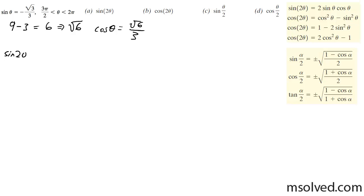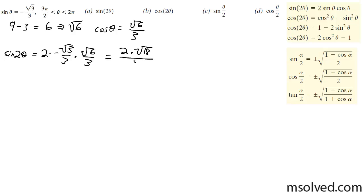So now I can solve for the sine of 2 theta, which is going to be equal to 2 times negative square root of 3 over 3 times square root of 6 over 3. This ends up being 2 times square root of 18 over 9. We can pull out a factor of 3, so we get 2 times square root of 2 over 3, which gives negative 2 square root of 2 over 3.